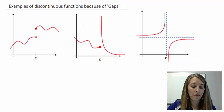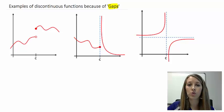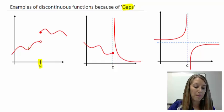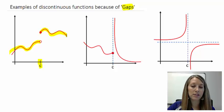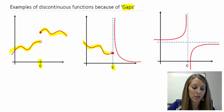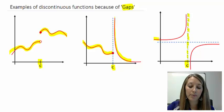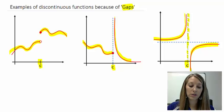Now let's see examples of discontinuous functions caused by gaps in the graph — meaning whenever we have to jump from one section of the graph to another. I have three examples, all discontinuous at C. In the first example, there are just two clearly defined pieces of the graph. In the second, there's a typical piece on the left and a vertical asymptote piece on the right. In the third, this is typical of rational functions: whenever we have a vertical asymptote, the graph jumps from going up on one side to down on the other side. These are all examples of discontinuous functions because of gaps.